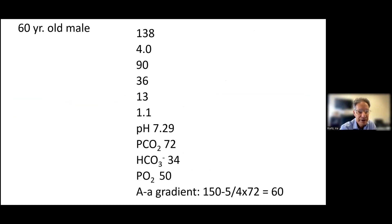Here's a patient — a 60-year-old male. The total CO2 is 36, and the patient may have a little CKD or AKI; we don't know how long this has been going on. Blood gases show a pH of 7.29, PCO2 of 70, calculated bicarbonate of 34, and PO2 of 50.